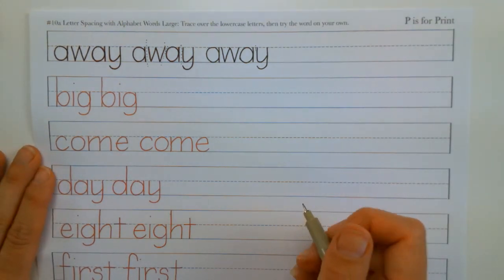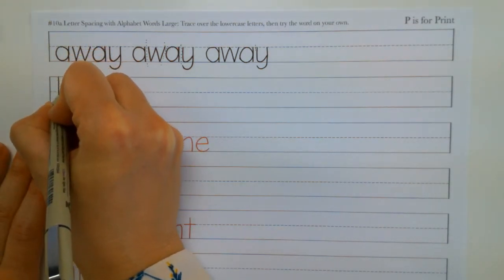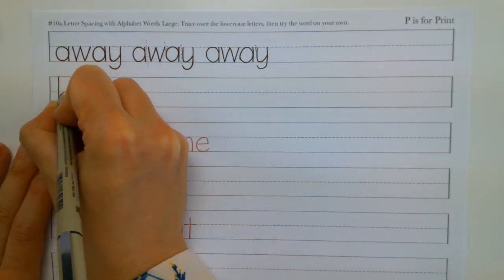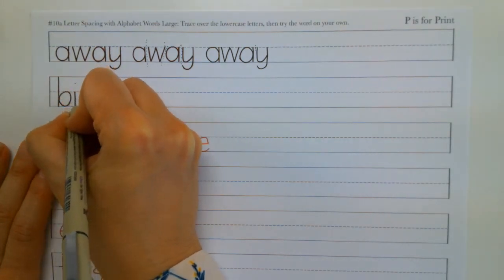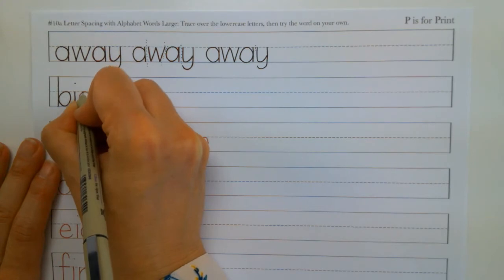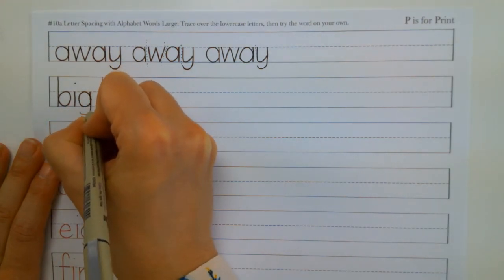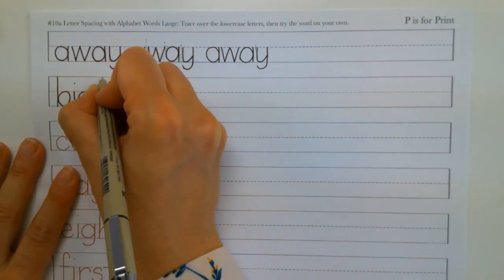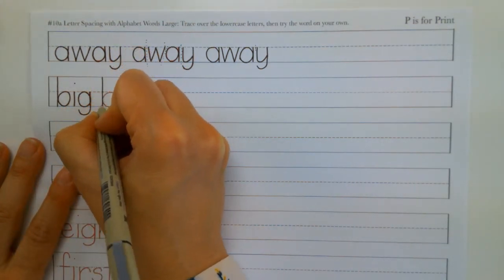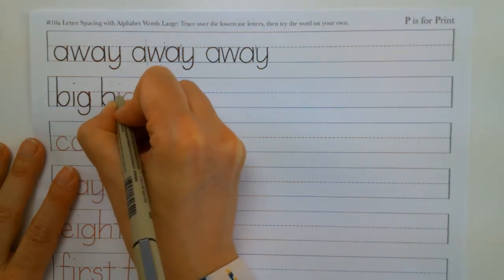Same thing with big. We have our vertical line. B-I-G or big. There's about a letter space.